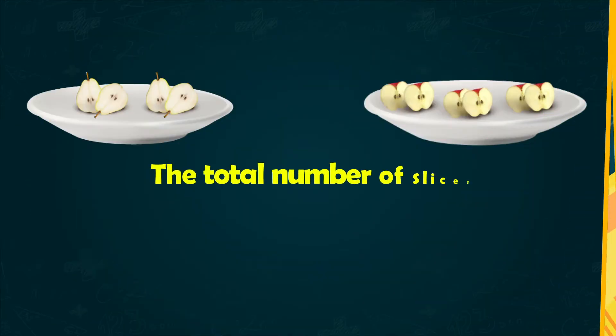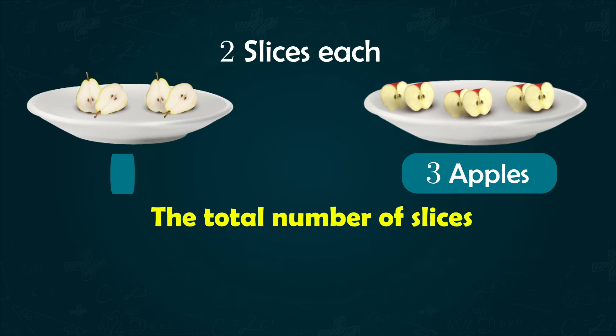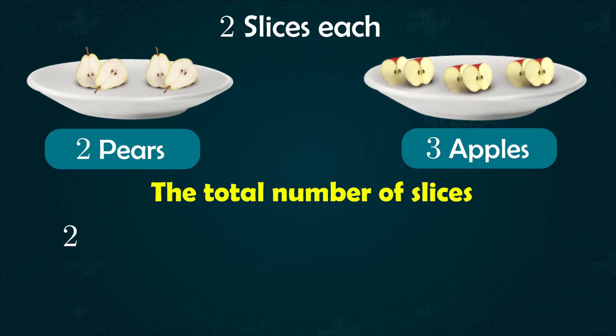The total number of slices is two pieces each of three apples and two pears. That is, 2 into (3 + 2) which equals 10.